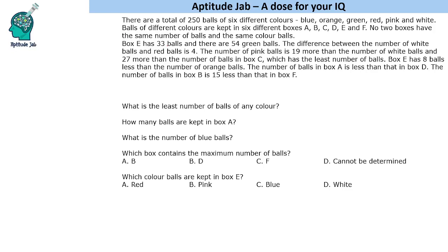Box E has 33 balls and there are 54 green balls. Let us make this statement 1, 2, 3, 4, 5, 6. E has 33 balls and there are 54 green balls, so for now let us write green 54.